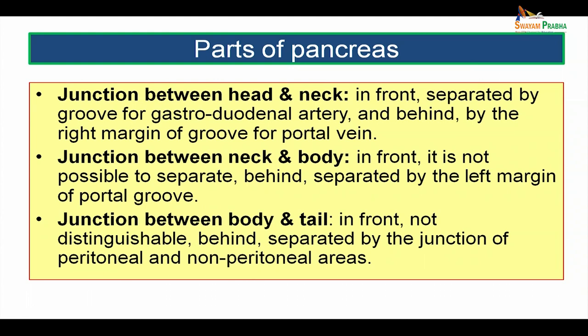The junction between the head and neck, anteriorly, is separated by a groove for the gastroduodenal artery, and behind it is marked by the right margin of the groove for the portal vein. The junction between the neck and body anteriorly cannot be demarcated, whereas behind it is separated by the left margin of the groove for the portal vein. The junction between the body and tail anteriorly is not distinguishable, but behind it is separated by the junction of the peritoneal and non-peritoneal areas of the pancreas.